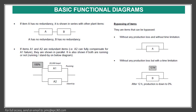We also show bypassing with some production loss and without time limitation — for example, 70% of 14,000 barrels per day. And here we show bypassing with some production loss and with a time limitation — for example, 12 hours at 70% of 14,000 barrels per day.